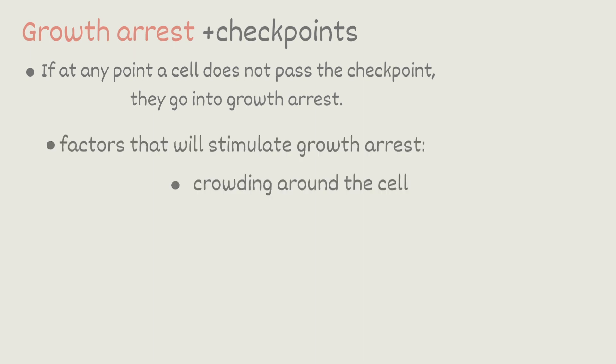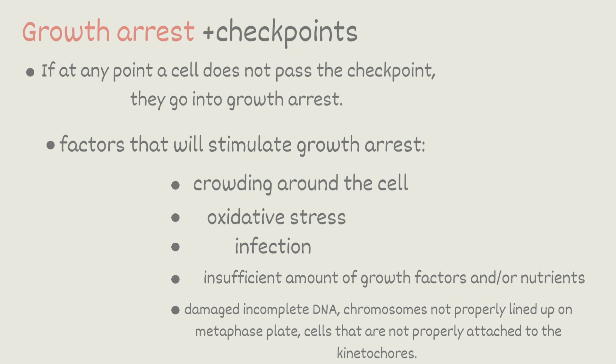Factors that stimulate growth arrest are crowding around the cell. So this is to prevent a tumor growing. If there is not enough space to grow, then the right thing for the checkpoint to do is say, hey, there is way too much growth around the area, so I really don't think you should be contributing to even more growth where we could become a tumor. So basically, it stops the cell from replicating itself. Other factors are oxidative stress on the cell. This includes cells that are just naturally aging and getting a bit too old to do their proper job. Infection, insufficient amount of growth factors and nutrients. Also damaged and incomplete DNA, and cells that are not properly attached to their kinetochores. So all of these will alarm the enzymes around the checkpoints and stimulate them to cause an arrest on the cell.